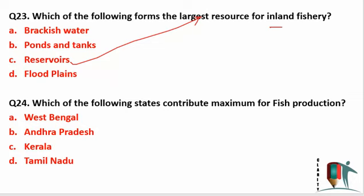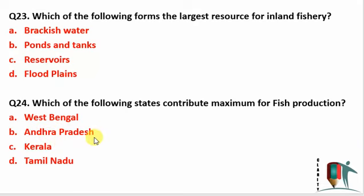Which of the following states contributes maximum to fish production — West Bengal, Andhra Pradesh, Kerala, or Tamil Nadu? The answer is Andhra Pradesh. Andhra Pradesh contributes maximum to fish production due to its large coastline.